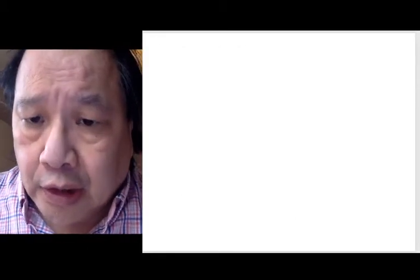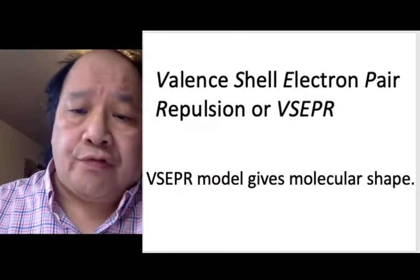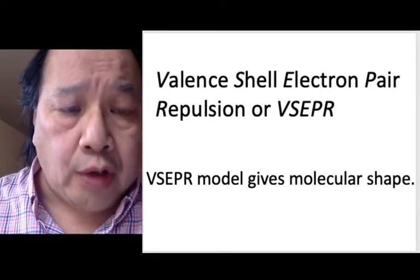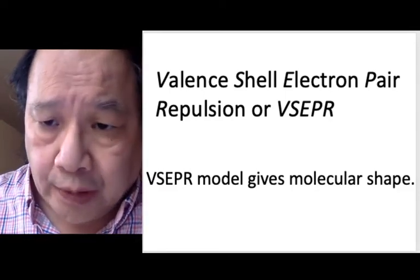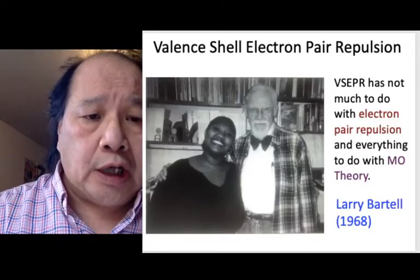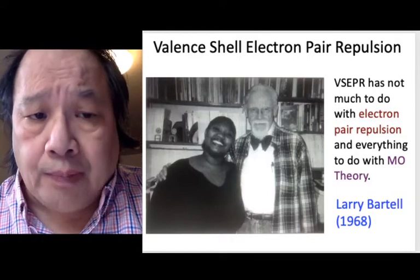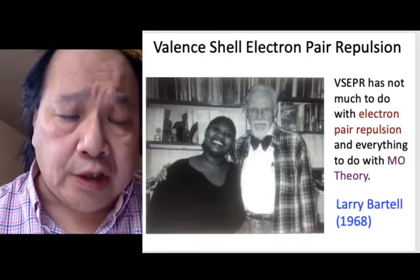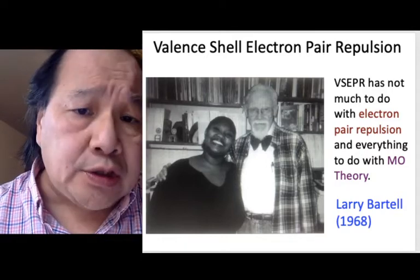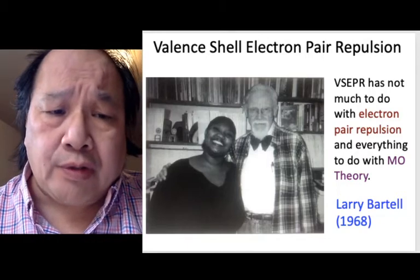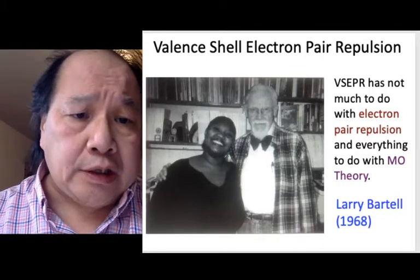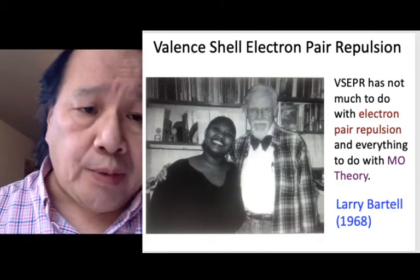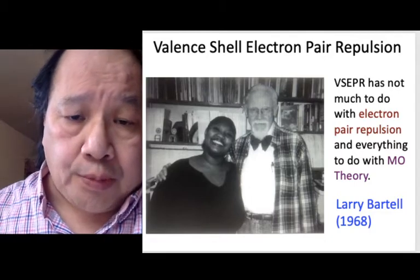The second scientist I'd like to talk about is in conjunction with valence shell electron pair repulsion — VSEPR — which is the model we use to uncover molecular shape. The scientist I'd like to talk about is Larry Bartel, who is not the scientist who made VSEPR theory. He's the scientist who discovered in the 1960s that VSEPR doesn't really have anything to do with electron pair repulsion, and has everything to do with MO theory — molecular orbital theory — which is going to be one of the major topics in the last portion of this course.